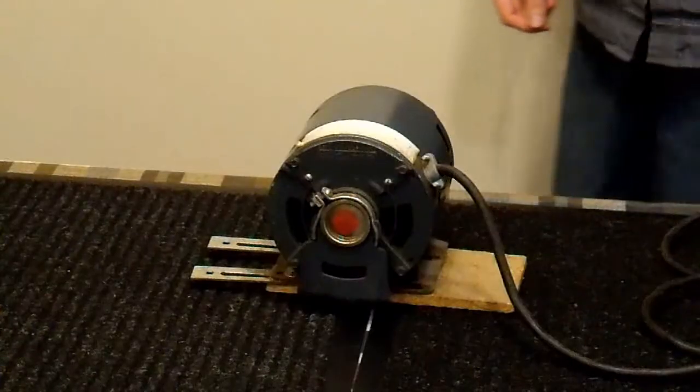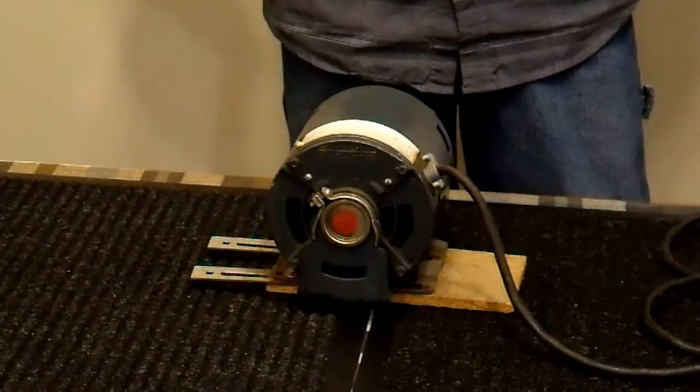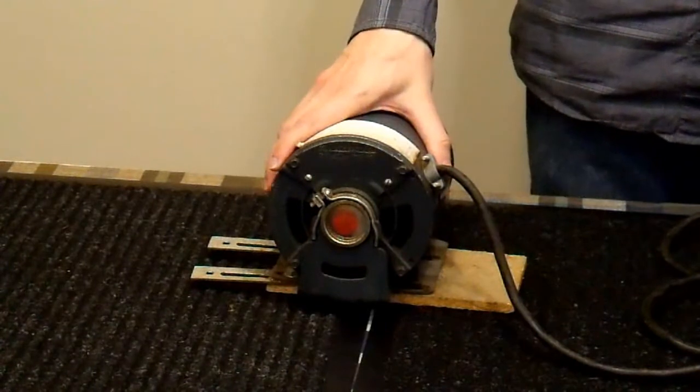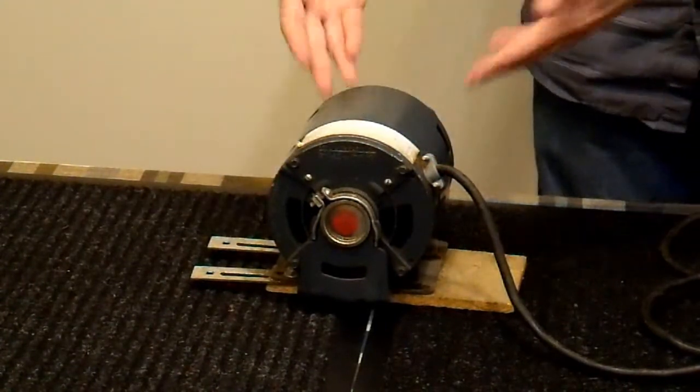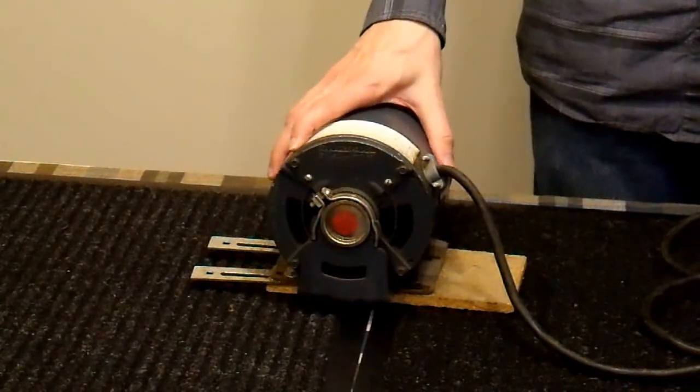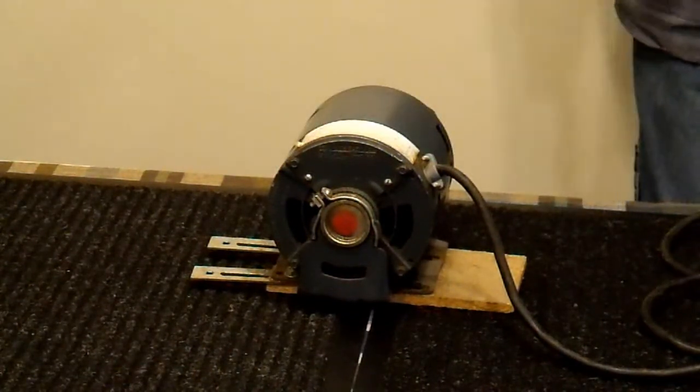But, anyway, now, if I were talking about inverters back in the 1920s, I would be talking about something like this, a rotary inverter. This happens to be an old electric motor made by General Electric, but the principle is pretty much the same. And, there were two ways that they could set these up at the time.